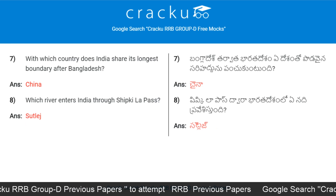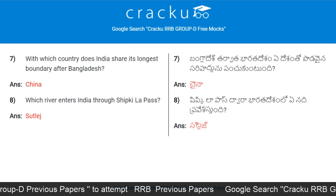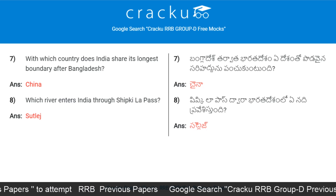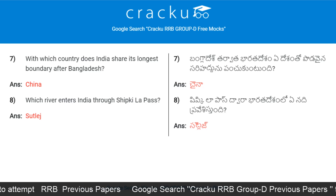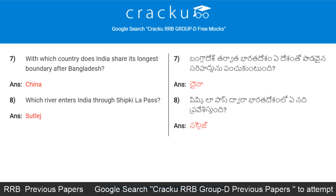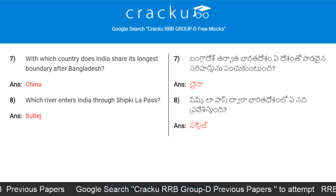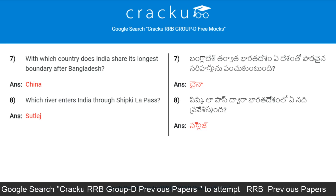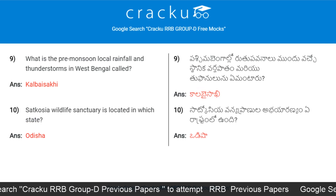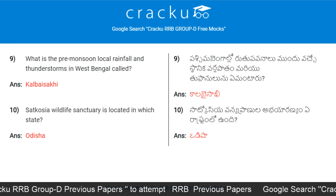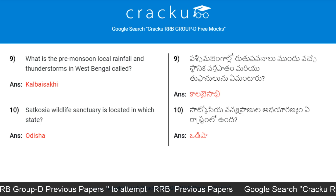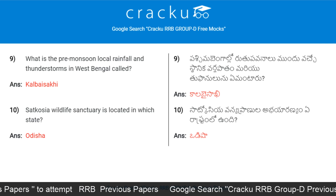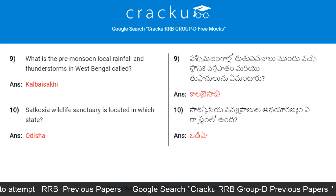With which country does India share its longest boundary after Bangladesh? China. Which river enters India through Shipkela Pass? Sutlej. What is the pre-monsoon local rainfall and thunderstorms in West Bengal called? Kal Baisakhi.